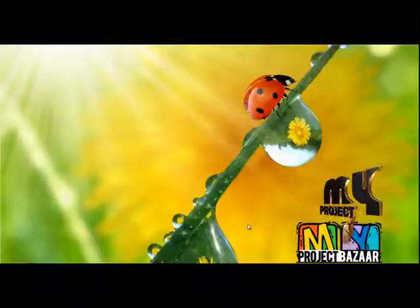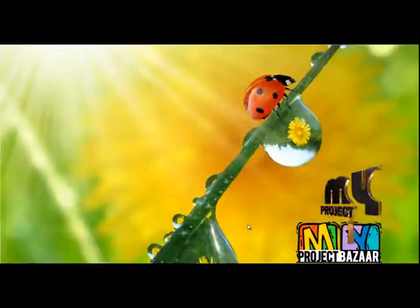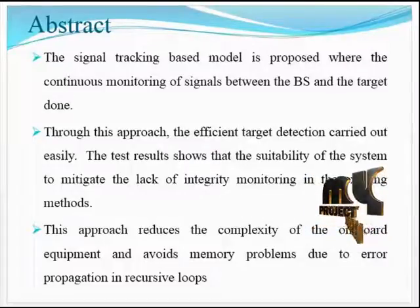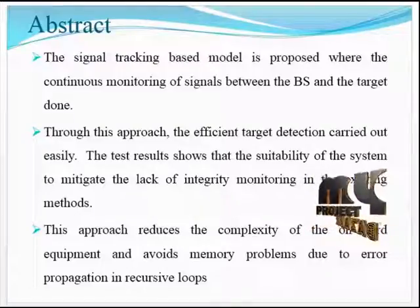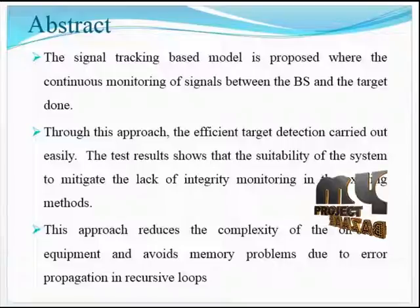Welcome to MyProjectBazaar.com. Here we are going to discuss receiver autonomous integrity monitoring of GNSS signals for electronic toll collection. The GPS-based monitoring systems are positional-based. If the position of the vehicle is shifted to some untracked region, the estimation of vehicle monitoring becomes difficult. For that purpose, the GNSS-based system integrity monitoring is proposed in this paper.